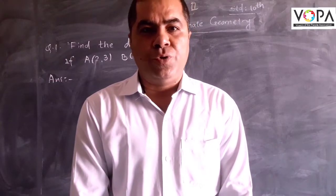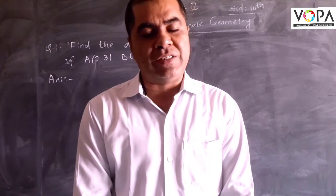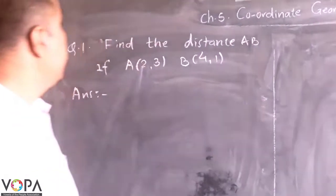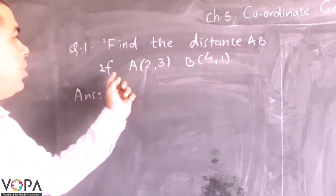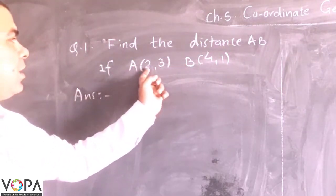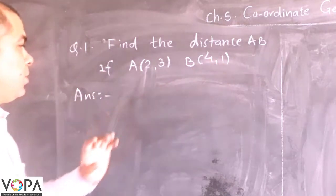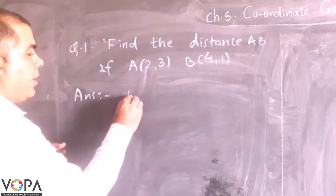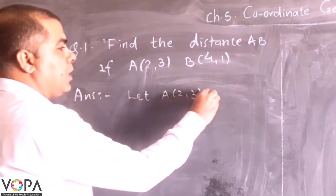Hello students, now we are going to see the examples on distance formula. The question is find the distance AB if its coordinates are A(2,3) and B(4,1).